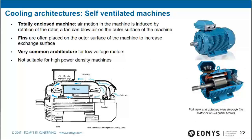Self-ventilated machines are totally enclosed — air motion is induced by rotor rotation and a fan can blow air on the outer surface. This is a very common architecture for low-voltage motors and is found everywhere. Fins are often placed on the surface to increase the exchange area, as in an ABB motor. However, it is not suitable for high power density machines because the cooling power is insufficient.